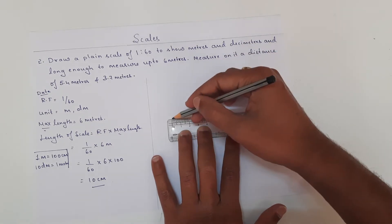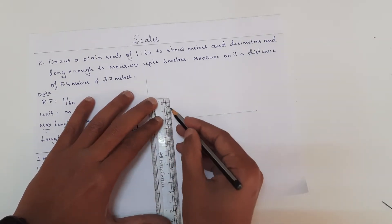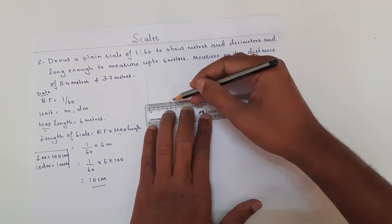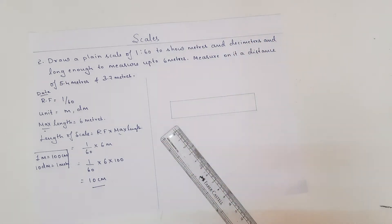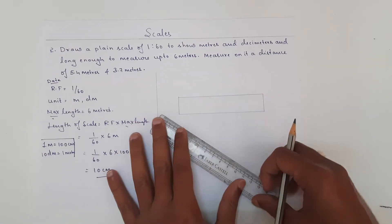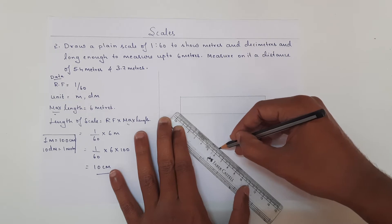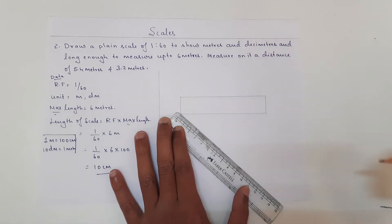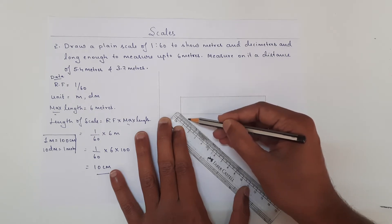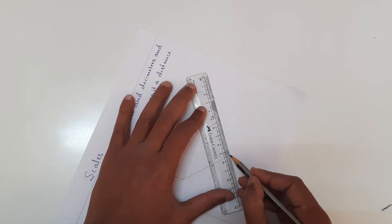First I am going to draw this 10 centimeter line. After this, I am going to draw a line 2 centimeters above from each end. Then we need to divide this 10 centimeters into 6 equal parts. To do that, from this end I am going to draw an inclined line which measures 6 centimeters, and divide it into 6 equal parts — 1 centimeter each. After this, I am going to draw a line from the extreme end to the extreme end of the scale.